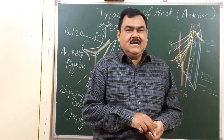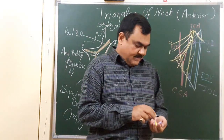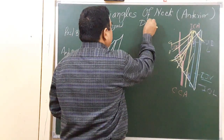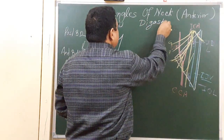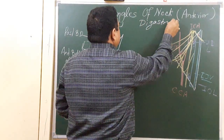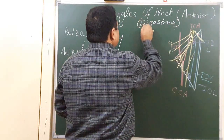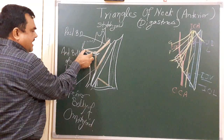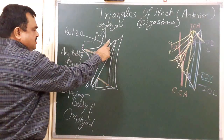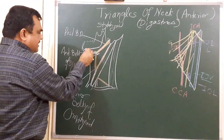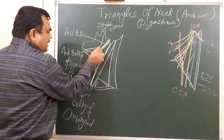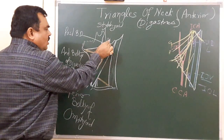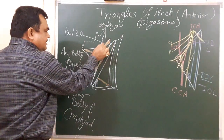Now I will discuss the digastric triangle. In this diagram, this is the anterior belly of the digastric, this is the posterior belly of the digastric. Here is the base of the mandible, and here is a line joining the angle of the mandible to the mastoid.